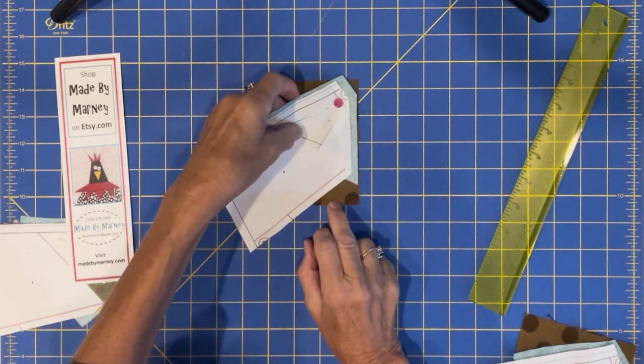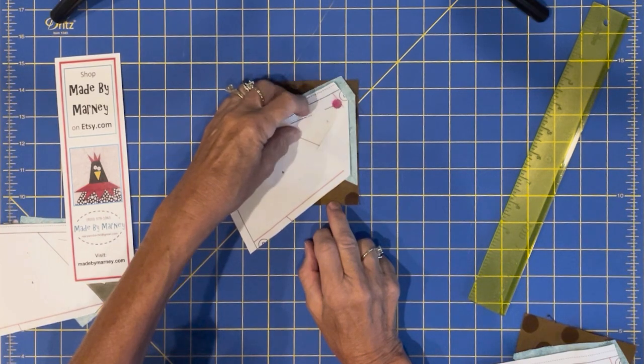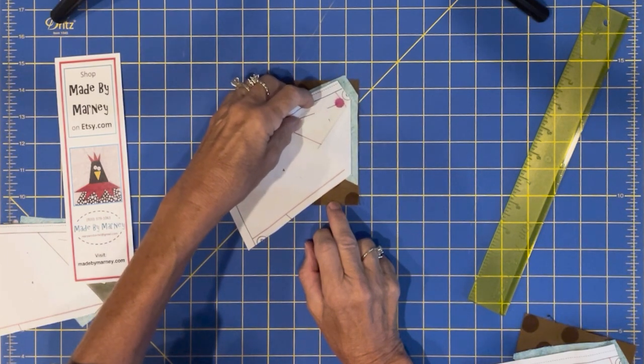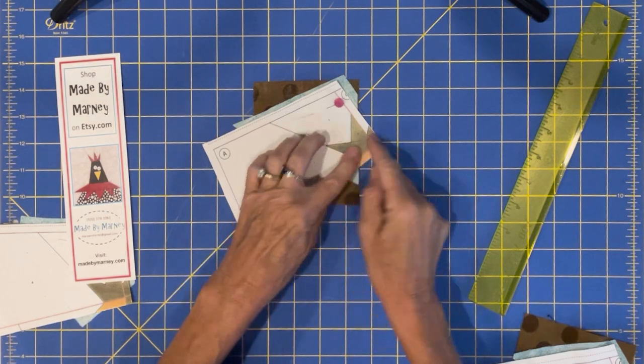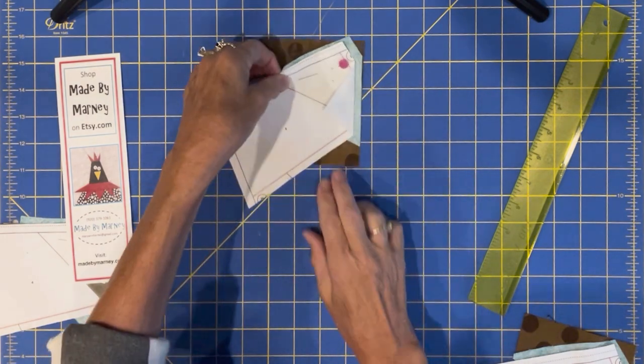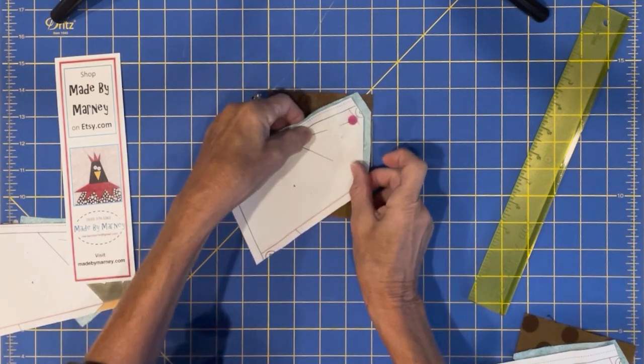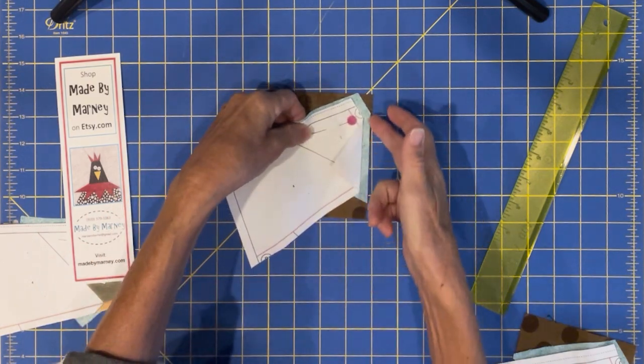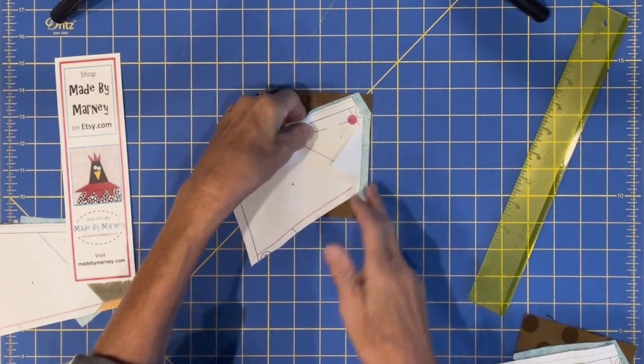When you're placing the fabric on for the next piece it's always a guessing game because your piece is folded back. Okay so where do you put it? Do you put it here? Do you put it here? You want to line it up so the edges of your seam allowance are even.